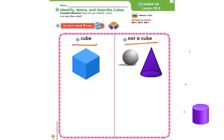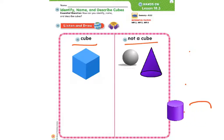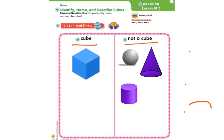Well, we noticed that it has flat surfaces, but they also still have curves. So this is not a cube. This is a cylinder. I'm going to move the shape into the not-a-cube side. Alright, let's move on to the next page.